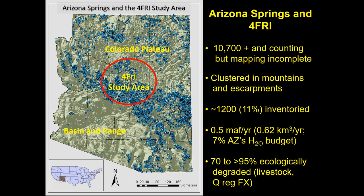Arizona overall has almost 11,000 springs — probably more, as mapping remains incomplete. The springs of Arizona are strongly aligned along the provincial boundary between the Colorado Plateau and the Basin and Range, and in the Sky Islands and Grand Canyon — clustered in mountains and escarpments. That makes the ForFRI study area particularly rich in springs. Still only about 1,200 springs, or about 11% of the springs in the state, have been visited and assessed as ecosystems. About half a million acre-feet of water emerges from these springs — six or seven percent of Arizona's annual water budget — and many are degraded.